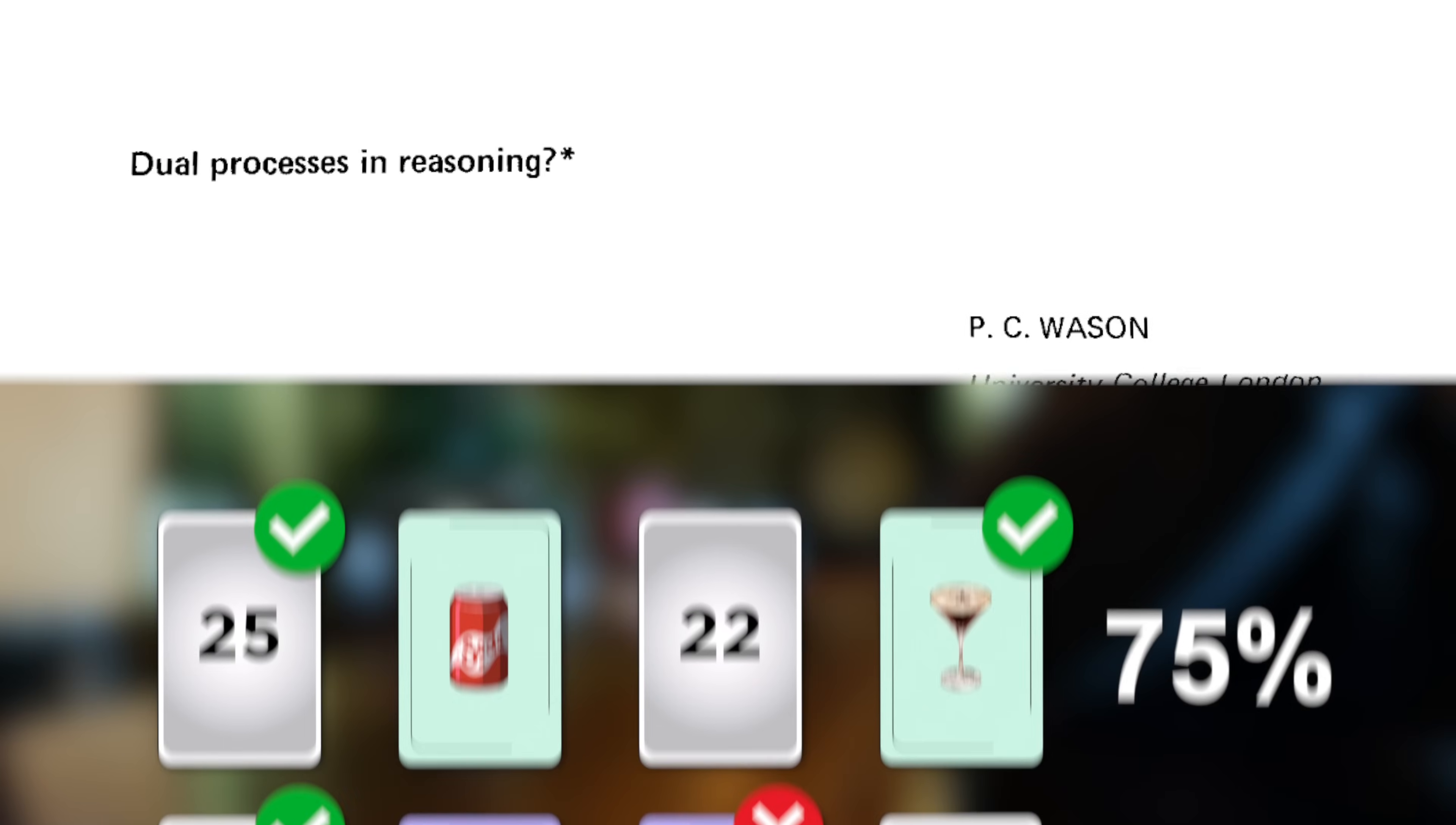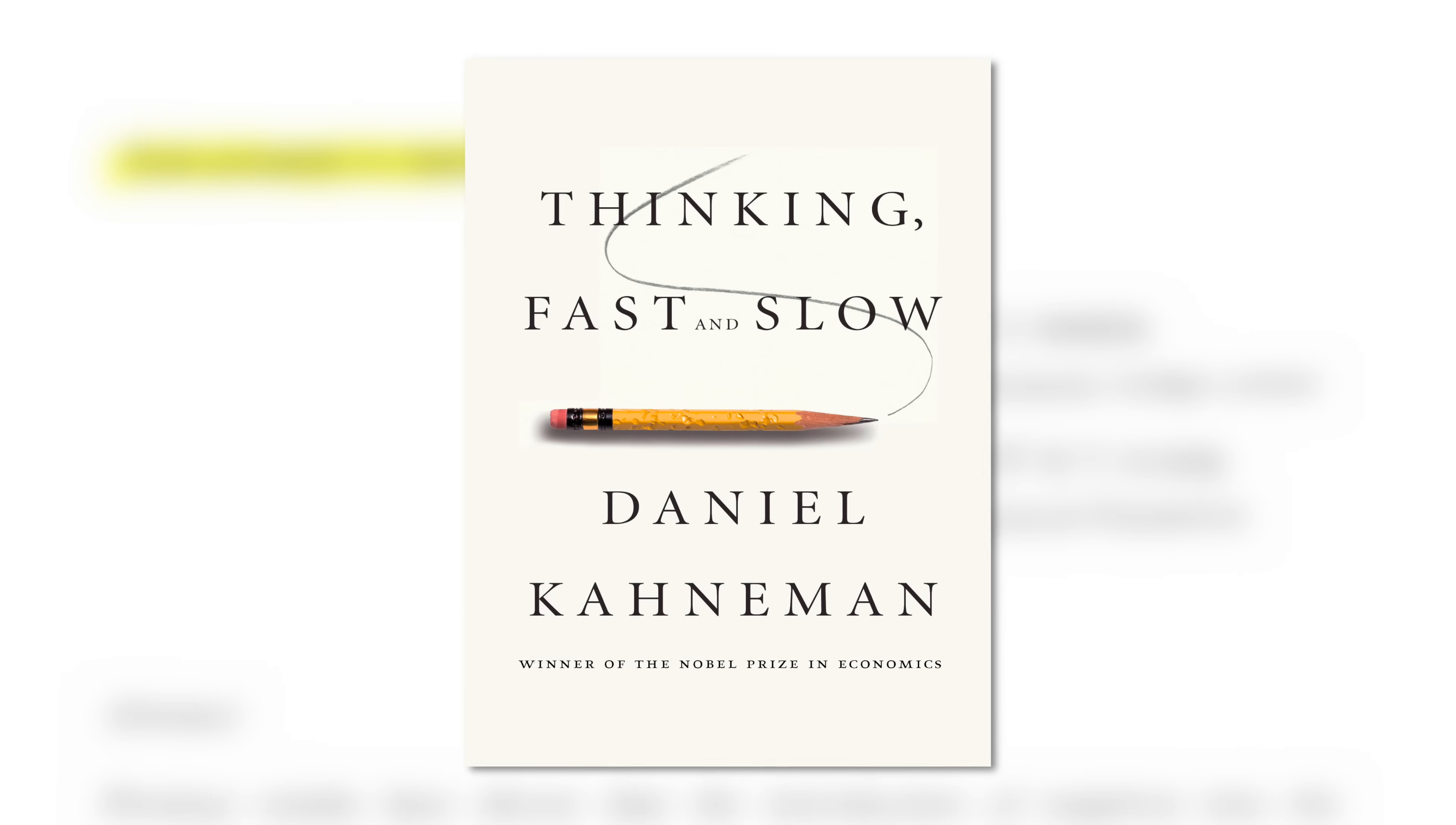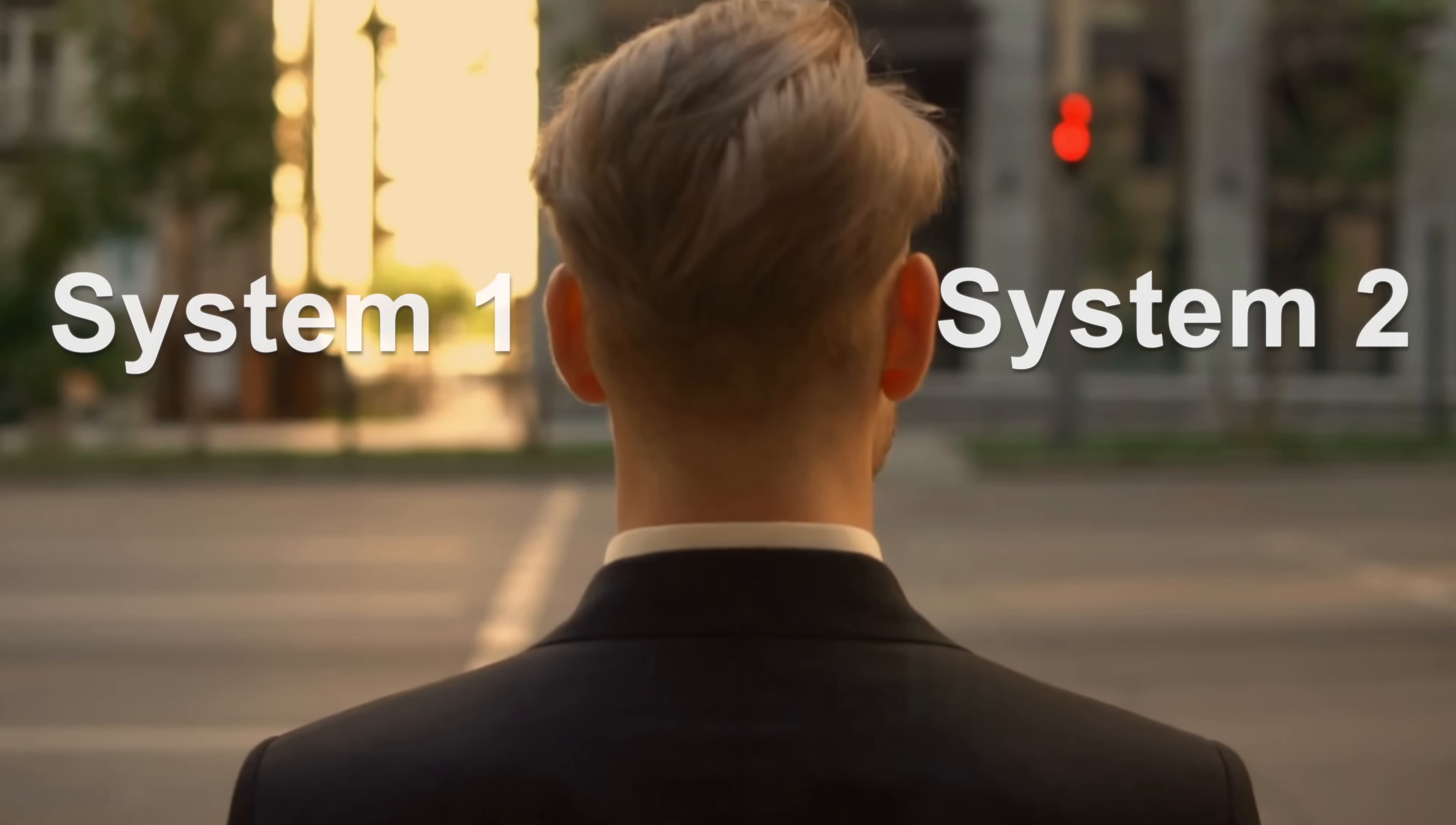Wason hinted at the possibility of dual processes in reasoning, which was later popularized by psychologist Daniel Kahneman in his book Thinking Fast and Slow. Kahneman describes two systems we use when we think.